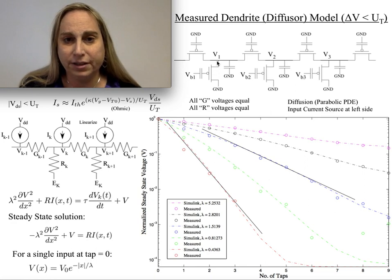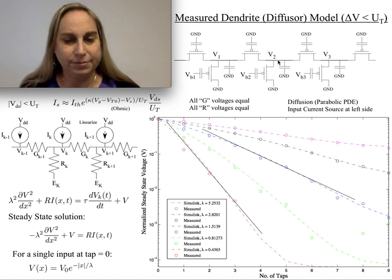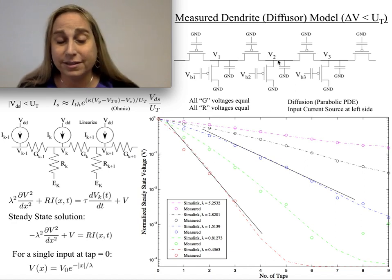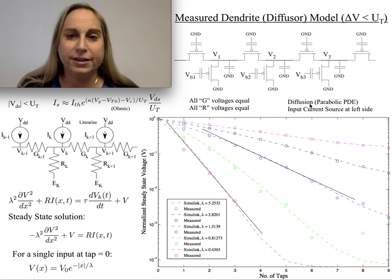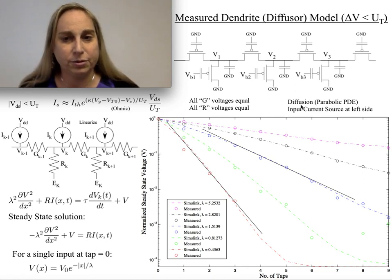Imagine if all of these resistances to ground are equal, all of these conductances between the nodes are equal, or at least meant to be relatively equal. What you end up expecting is you're going to get diffusion or a parabolic PDE, effectively the heat equation.